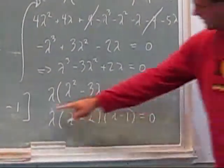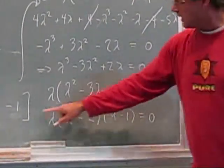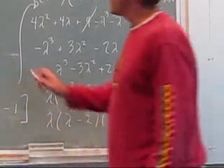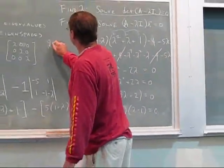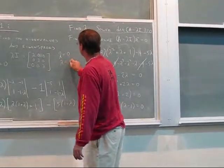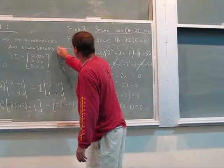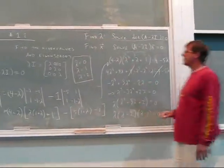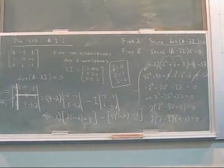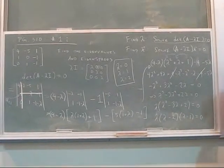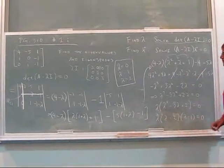So from that last step here, you can see that we have three values of lambda: lambda equals 0, lambda equals 1, and lambda equals 2. Okay, those are our three values. Three values of lambda.